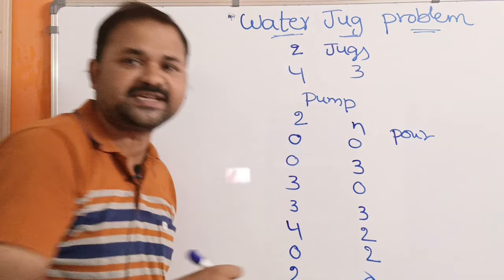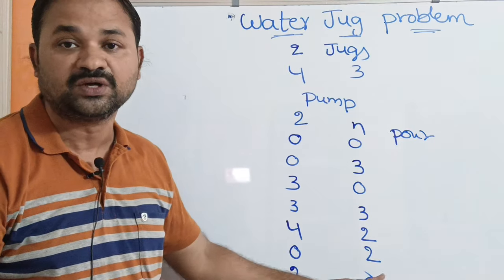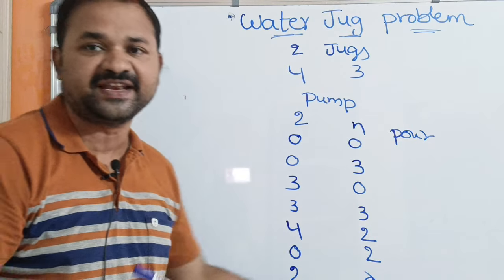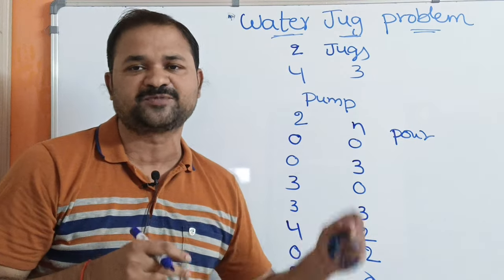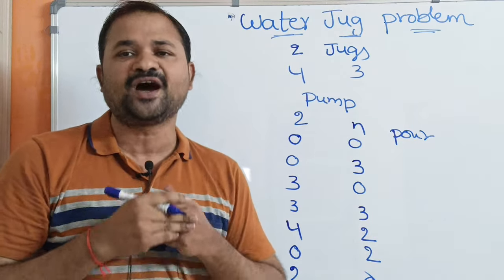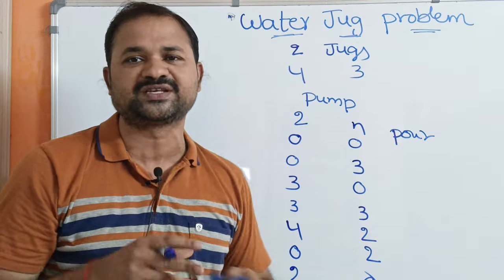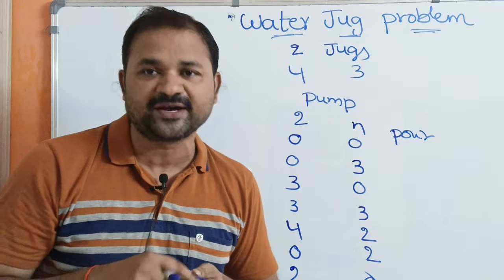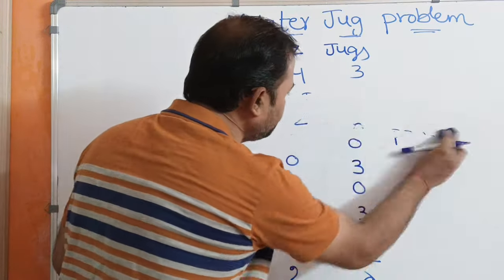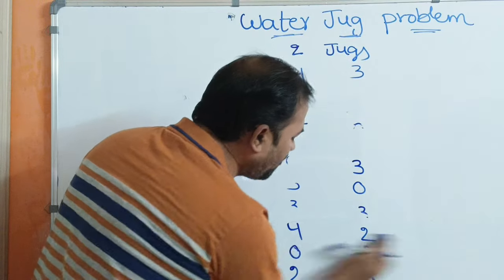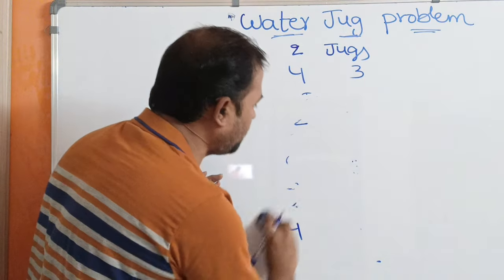So (2, 0) is the final state. Now we have to solve this problem formally. In order to solve it, we will use several production rules. First let us write those rules, and after that we are going to solve the problem.